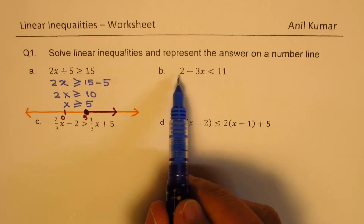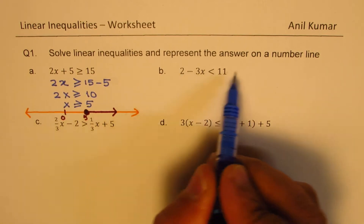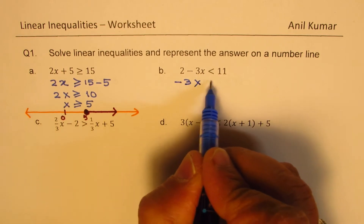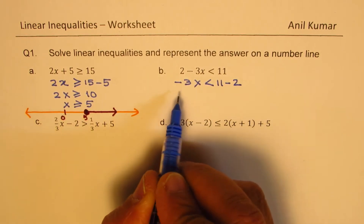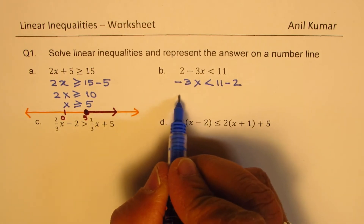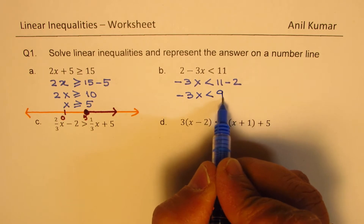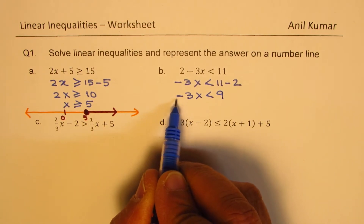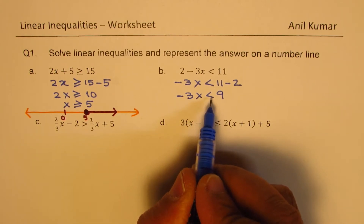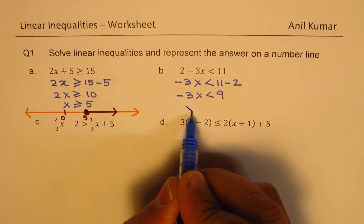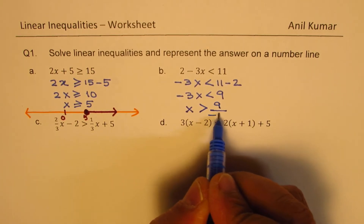The second question is: 2 minus 3x is less than 11. We will take away 2, giving us minus 3x is less than 11 minus 2. We rewrite this as minus 3x is less than 9. Now we divide by minus 3, giving us x is greater than 9 divided by minus 3.